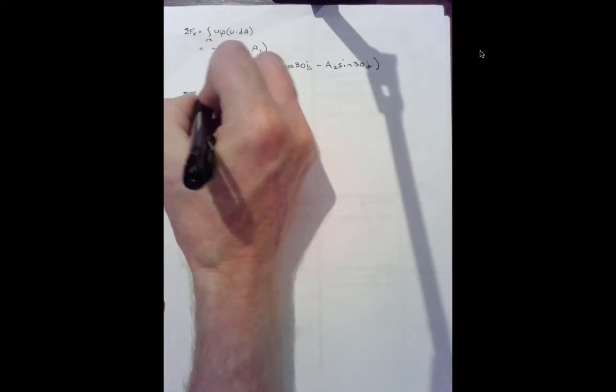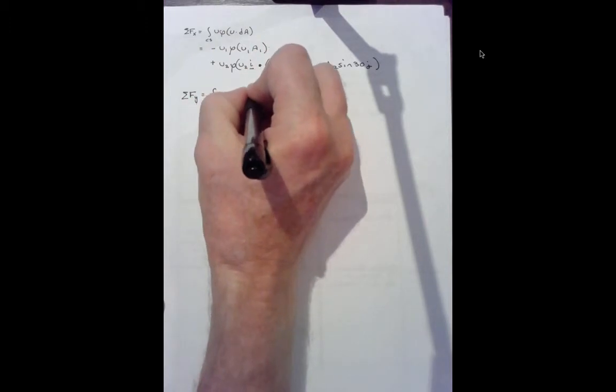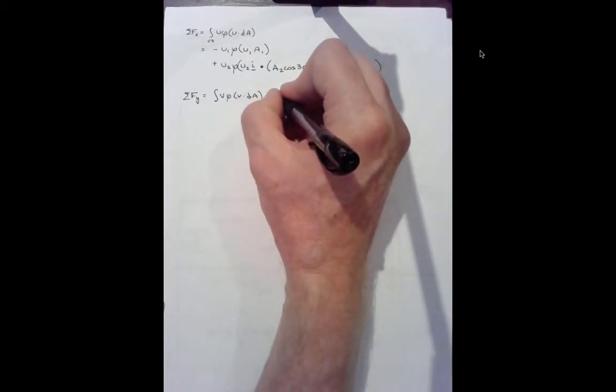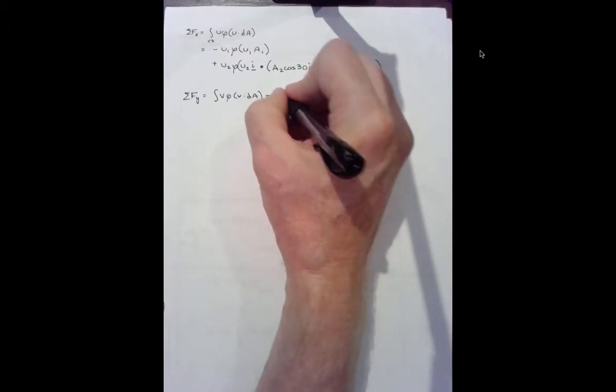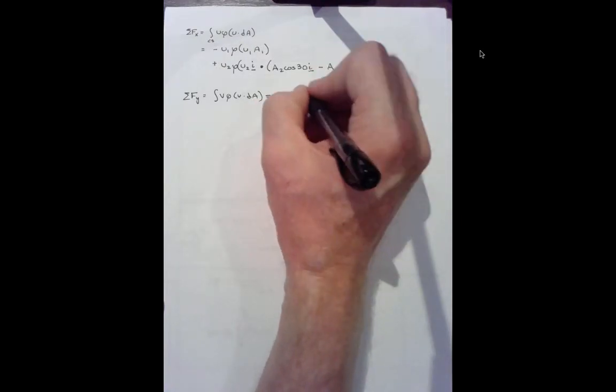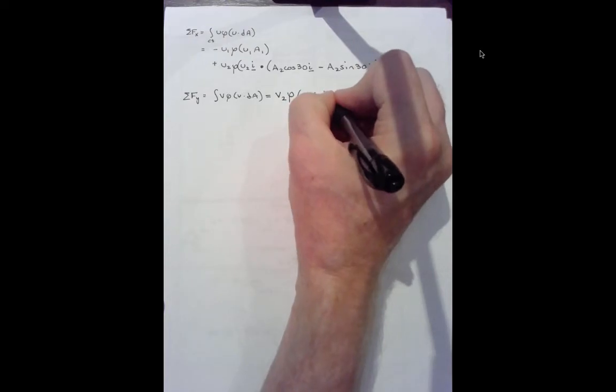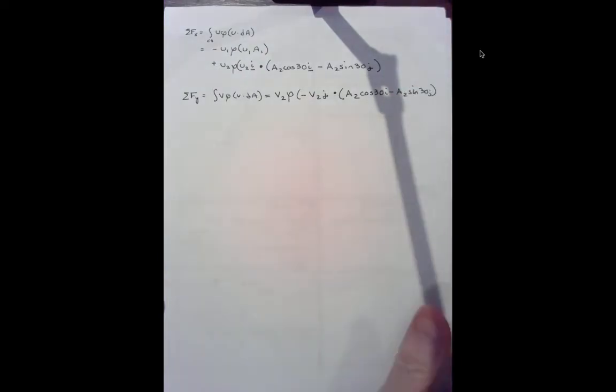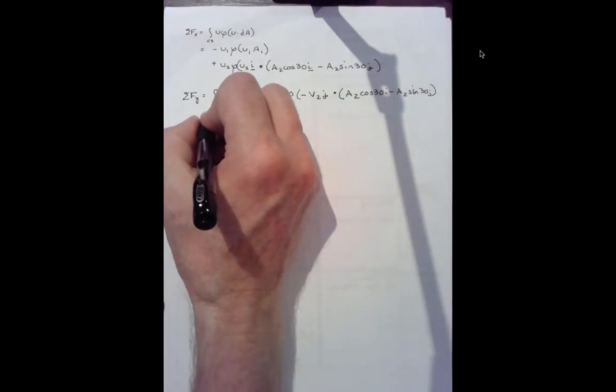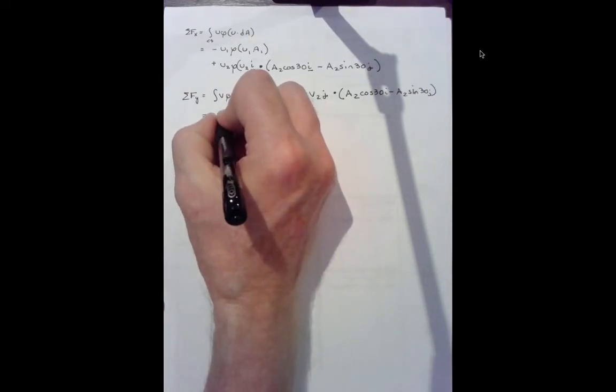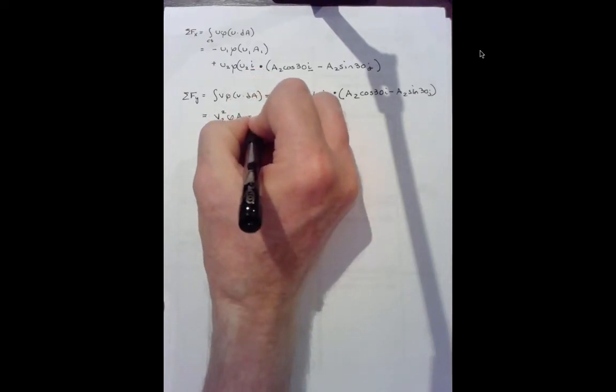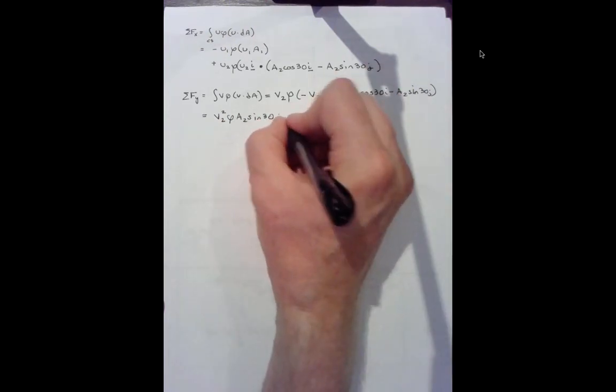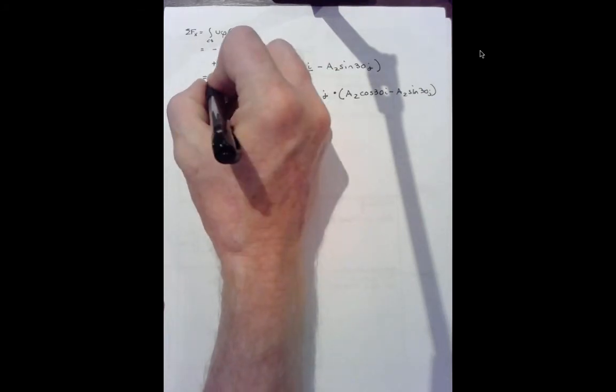Sum of the forces in the y is integral of v rho v dot dA minus v2 j in a product with a2 cosine 30 i minus a2 sine 30 j. That equals v2 squared rho a2 sine 30 j direction.